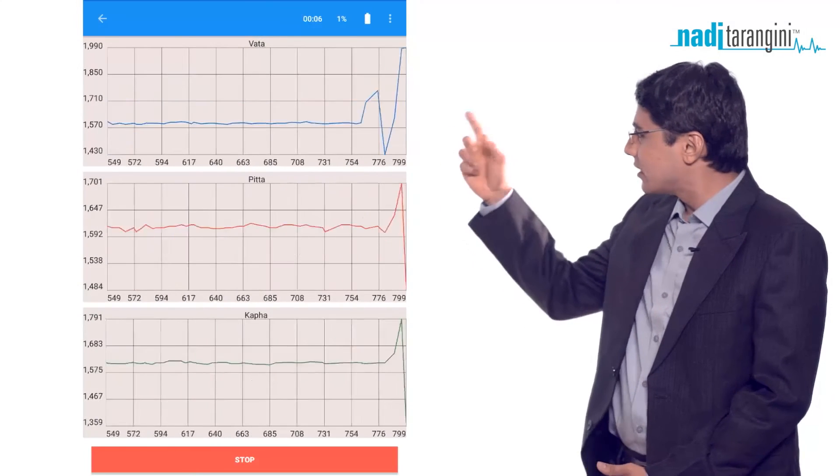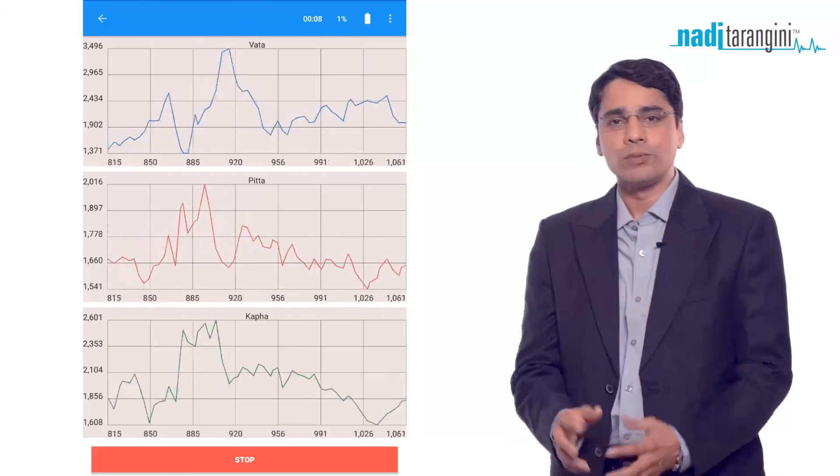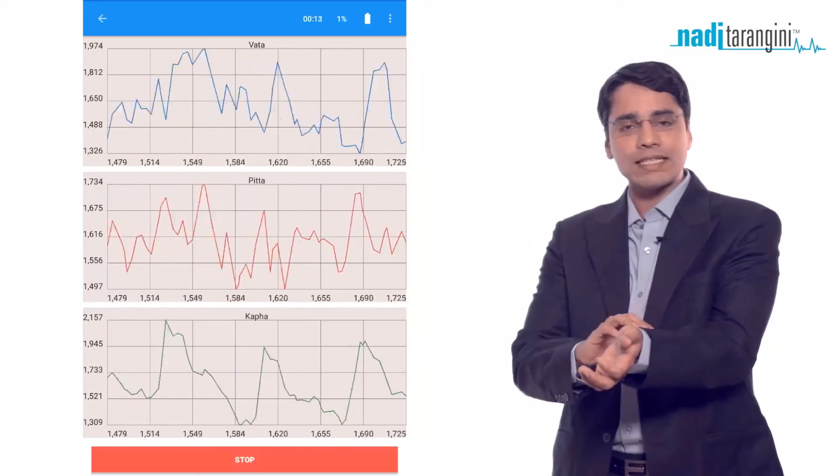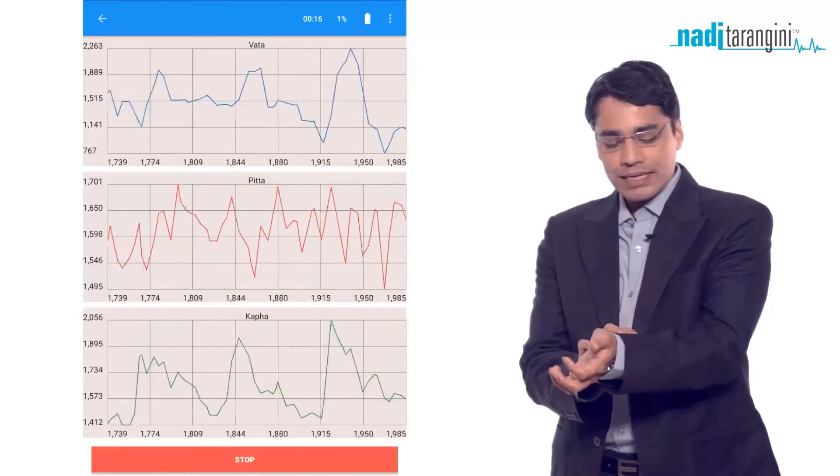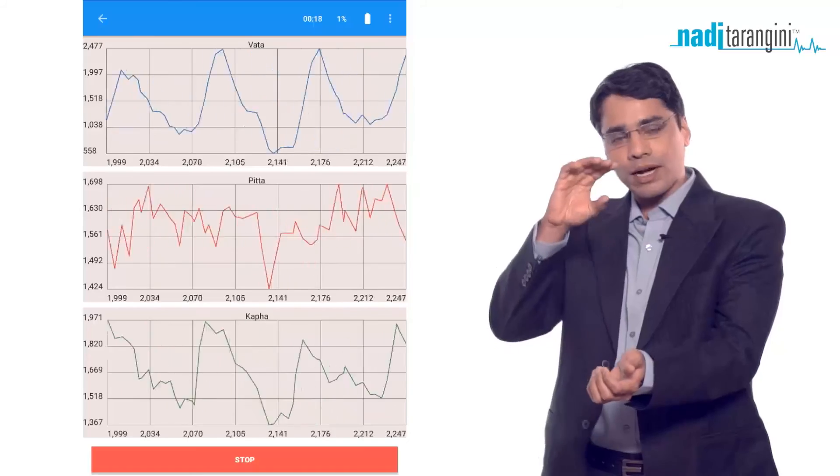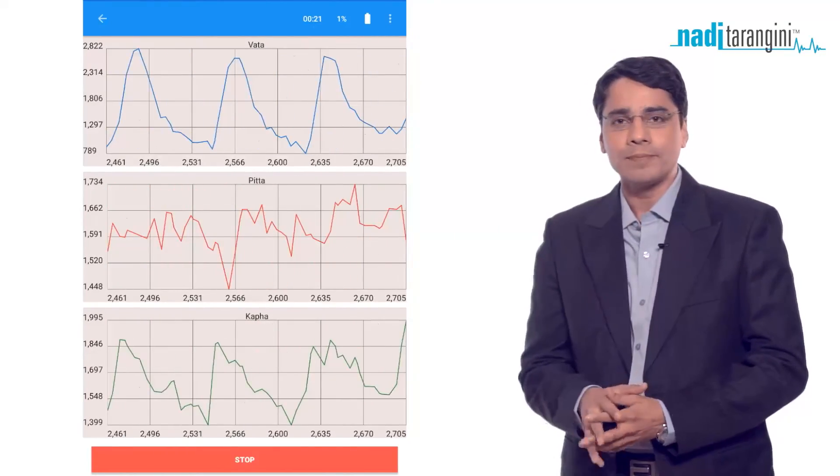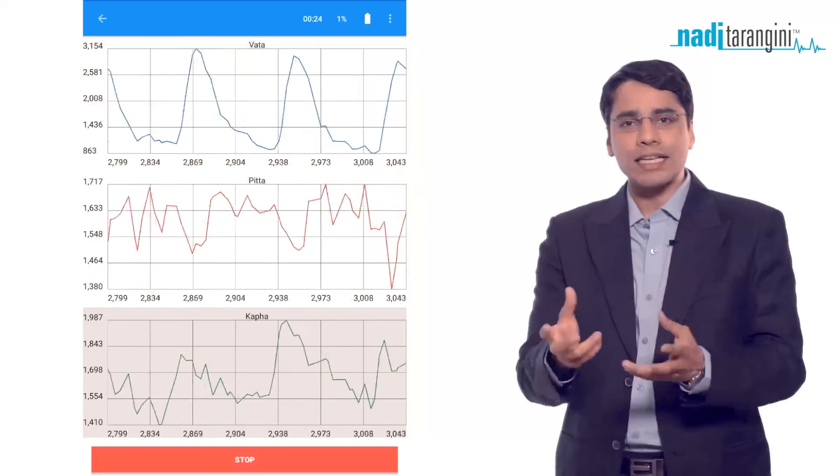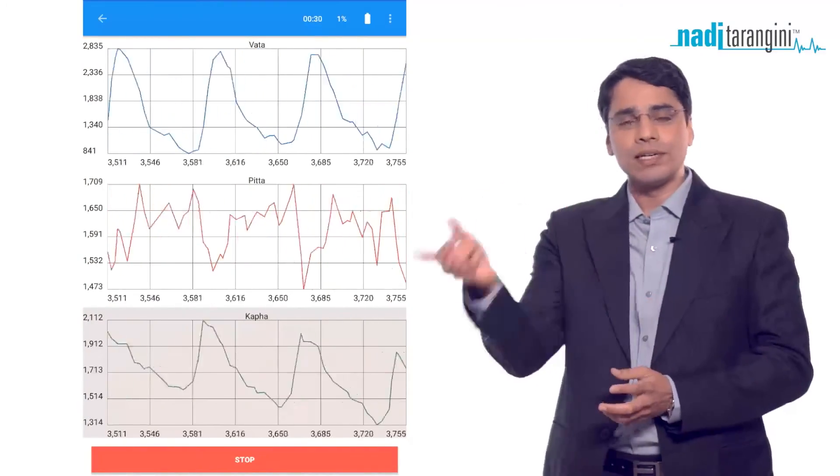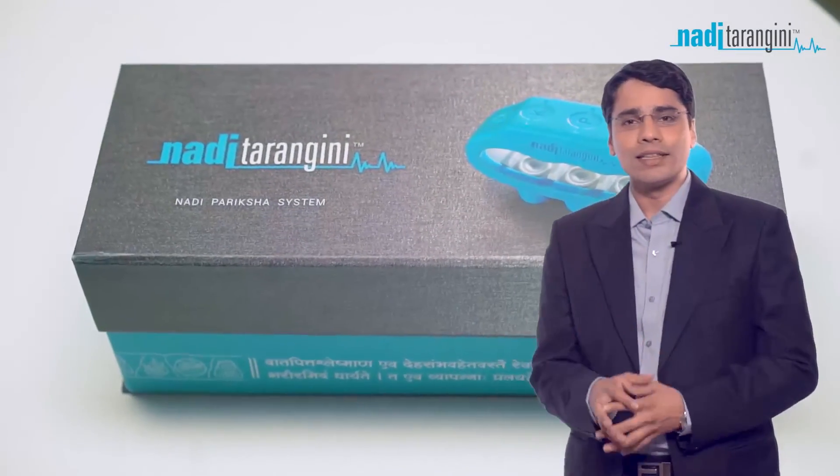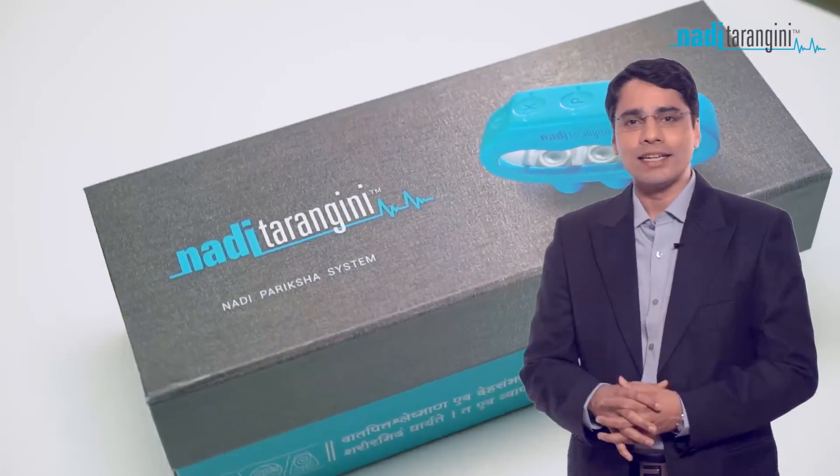When you don't get a rhythmic P-T-V-D pattern, there could be multiple reasons. First, you may not have placed the sensor at the exact location. Second, you may not have applied enough pressure. Third, the Nadi itself may be very sukshma (subtle) for the sensor to recognize and convert to digital form. The more you use Nadi Tarangini, the easier it becomes to understand the Nadi patterns.